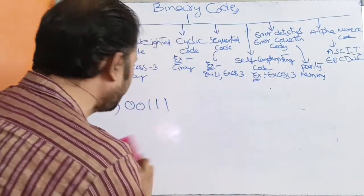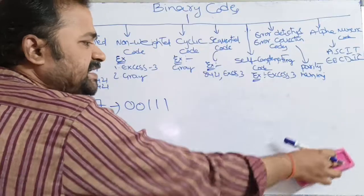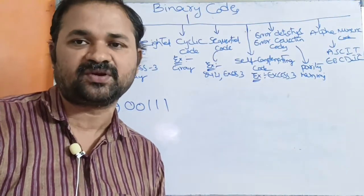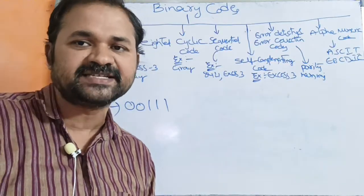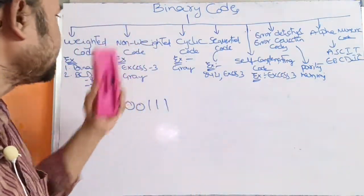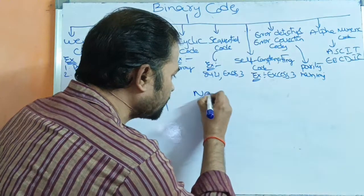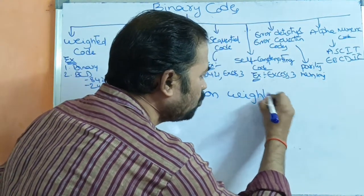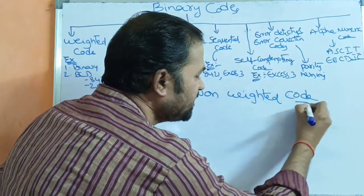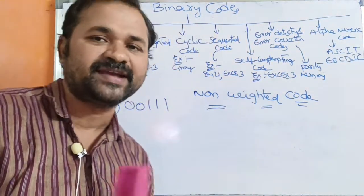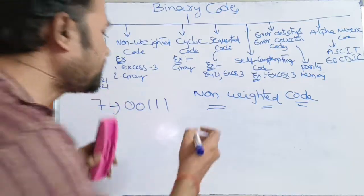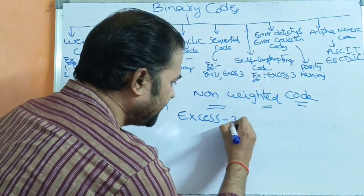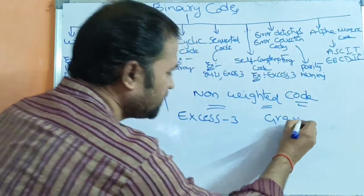For representing each decimal digit, we require 4 bits. Now let us see about non-weighted code. The name itself specifies the meaning — here the value doesn't depend upon any positional weight. The best examples for non-weighted code are XS3 and grey code.